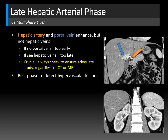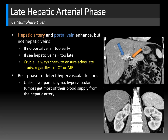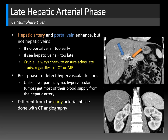The late hepatic arterial phase — which you can think of as an arterial-portal phase — is the best phase to detect hypervascular lesions. Unlike the liver parenchyma, which gets most of its blood supply from the portal vein, hypervascular tumors get most of their blood supply from the hepatic artery. This is different from the early arterial phase done with a CT angiogram, and even though it's counterintuitive, that early phase is often too early to pick up hypervascular liver lesions.